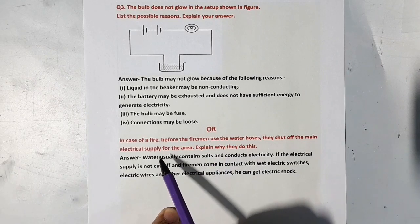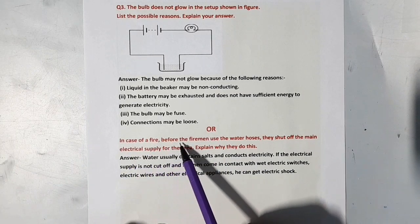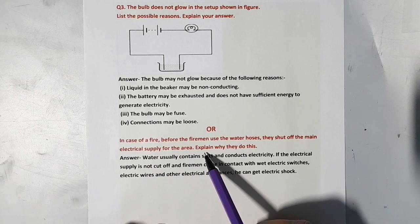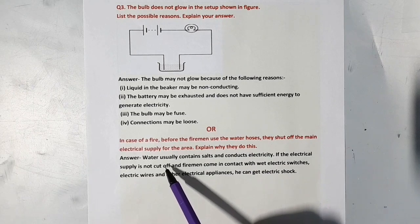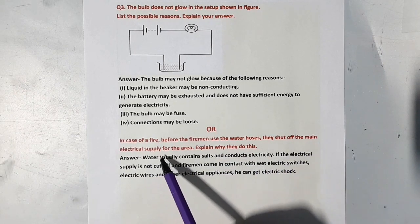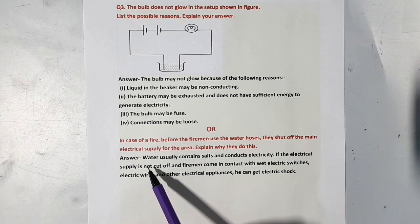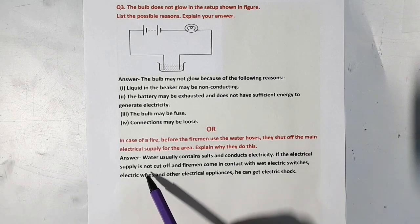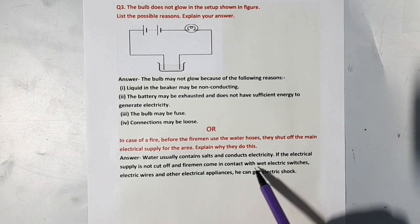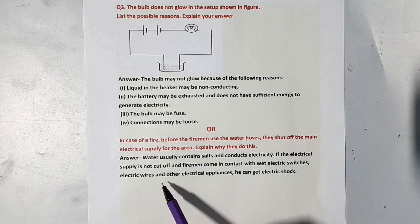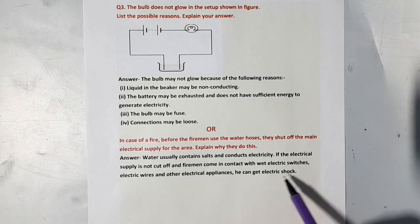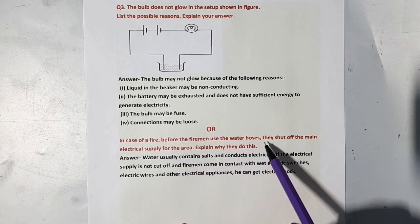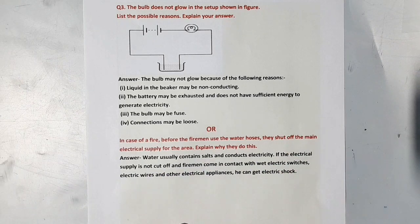The next question is: In case of a fire, before the firemen use the water hoses, they shut off the main electrical supply for the area. Explain why they do this. Water usually contains salts and conducts electricity. If the electrical supply is not cut off and firemen come in contact with the wet electric switches, electric wires and other electrical appliances, they can get electric shock. So this is the reason that why in case of fire, before the firemen use the water hoses, they shut off the main electrical supply for the area.